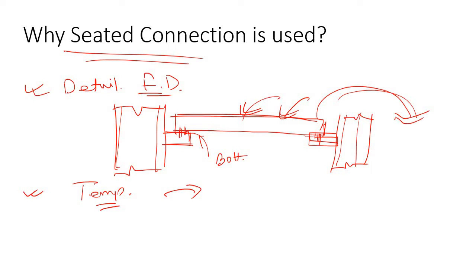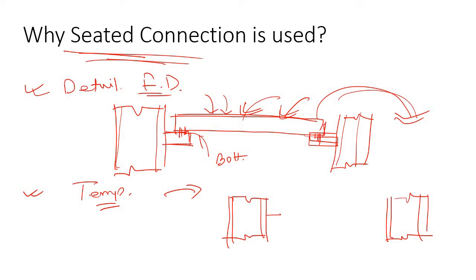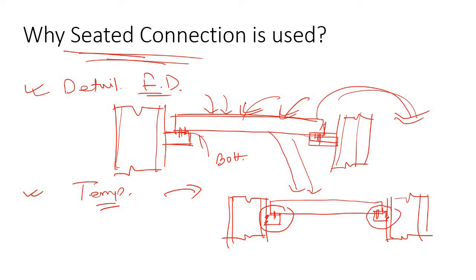You can then put the beam somewhere else and reuse it very easily. Not only that — once you are using a seated connection, let's say you have already erected two columns. There is a support that is welded or bolted to the column flange. Once you place the beam here, even before putting the bolts in, you already have support at both locations, so you get an immediate support after erection. These are the advantages of using a seated connection.